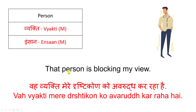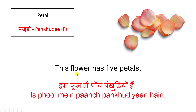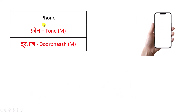Person — Petal. This flower has five petals. इस फूल में पाँच पंखुड़ियाँ हैं। Petal — Phone.